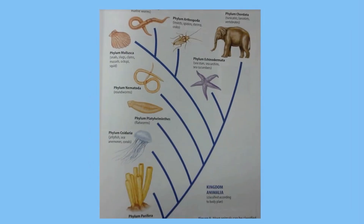There are more than 30 animal phyla, but more than 90% of all animals can be found in the following nine phyla.